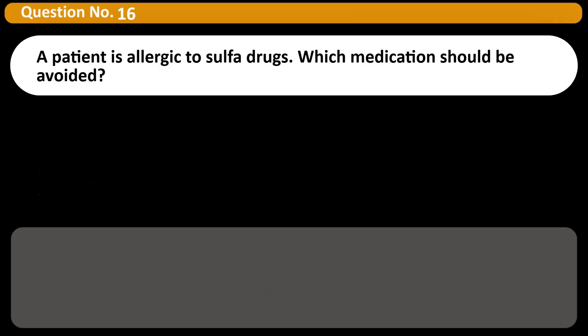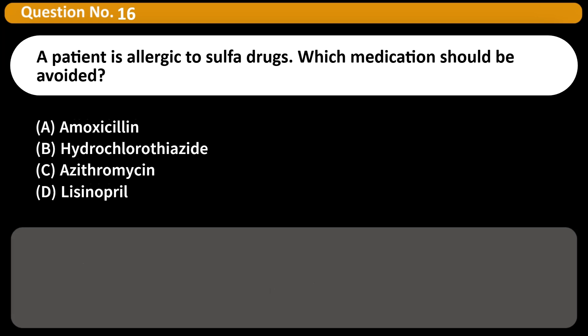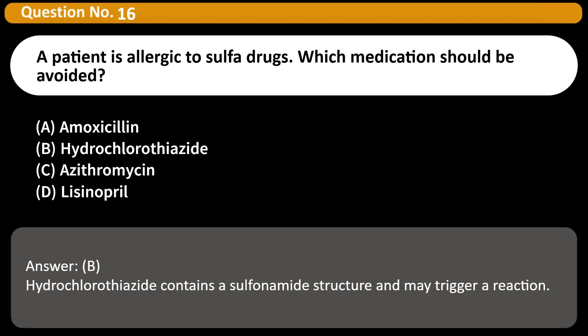A patient is allergic to sulfa drugs. Which medication should be avoided? A. Amoxicillin. B. Hydrochlorothiazide. C. Azithromycin. D. Lisinopril. Answer: B. Hydrochlorothiazide contains a sulfonamide structure and may trigger a reaction.